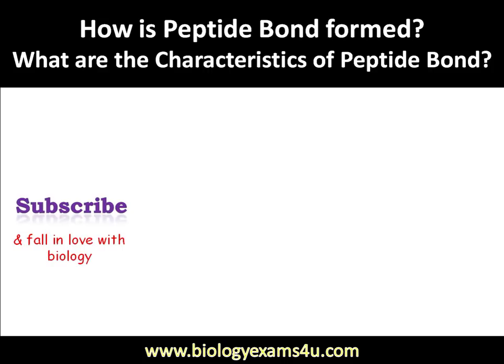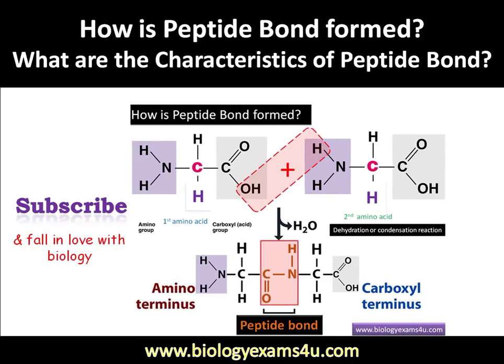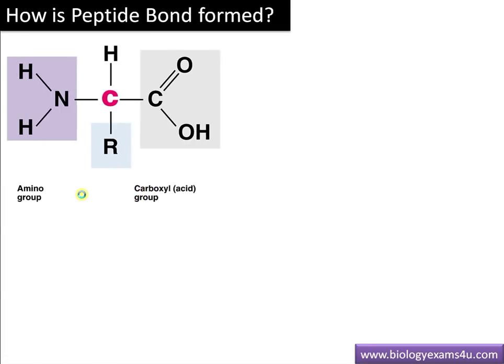Hi friends, welcome to biologyexams4u.com. Today the topic of our discussion is how is a peptide bond formed and what are the characteristics of peptide bond in detail. Starting with peptide bond formation: a peptide bond is a bond that connects amino acids.